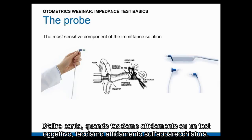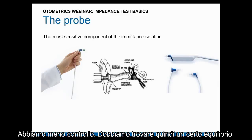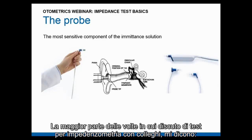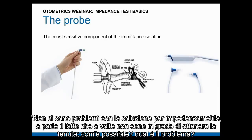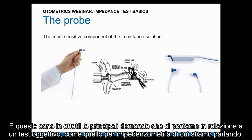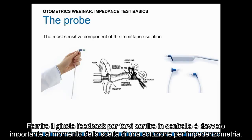On the other hand, when relying on an objective test, we rely on the machine and have less control. We need to find a balance. Most professionals tell me they have no problem with the immittance solution, except that sometimes they can't achieve a seal. The question then is: is it me, is it the patient's ear, is it the solution, or is the device not working properly? Providing the right feedback so you feel in control is very important when selecting an immittance solution.